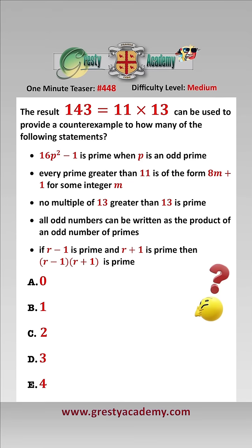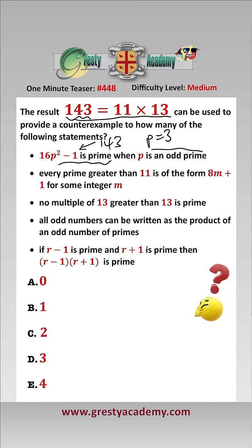Let's go through these statements one by one. Even though 143 is not an odd prime, if we take p equals 3, which is an odd prime, 16p squared minus 1 is 143, and we know that is not prime because of our result here, so therefore we can use that as a counterexample.